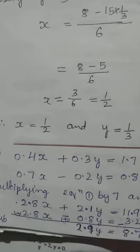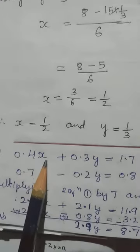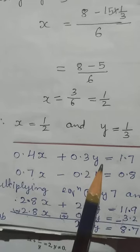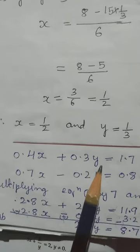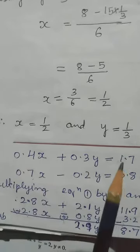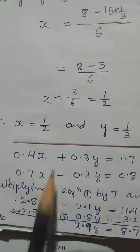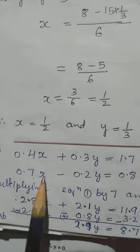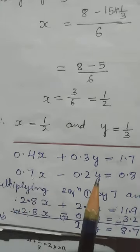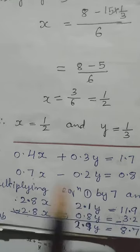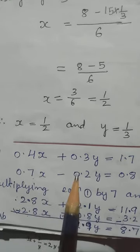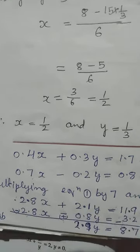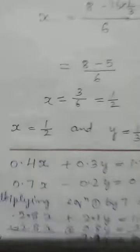Y equal to 3. Let us check if the answer is correct or not. 0.4 into 2 gives 0.8. 0.3 into 3 gives 0.9. So 0.8 plus 0.9 gives 1.7 — that means the answer is correct. 0.7 into 2 gives 1.4. 0.2 into 3 gives 0.6. 1.4 minus 0.6 gives 0.8. If left equals right, that means the answer is correct.